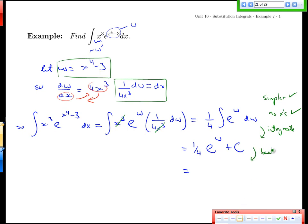And then last but not least, we go back to x's. And that's going to give us 1 quarter e to the x to the 4 minus 3. All of that plus a constant back on the main line.